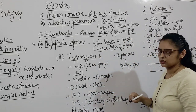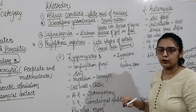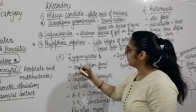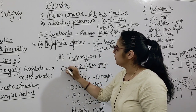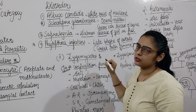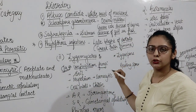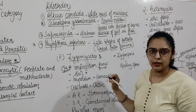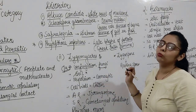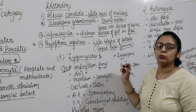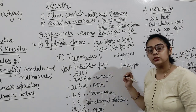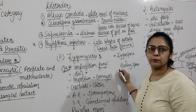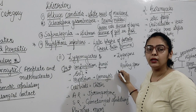The second category of Phycomycetes is Zygomycetes, also known as conjugation fungi. They live in the soil. Mode of nutrition is saprophytic and parasitic, because they cause disease. The mycelium is coenocytic — multinucleate and aseptate.